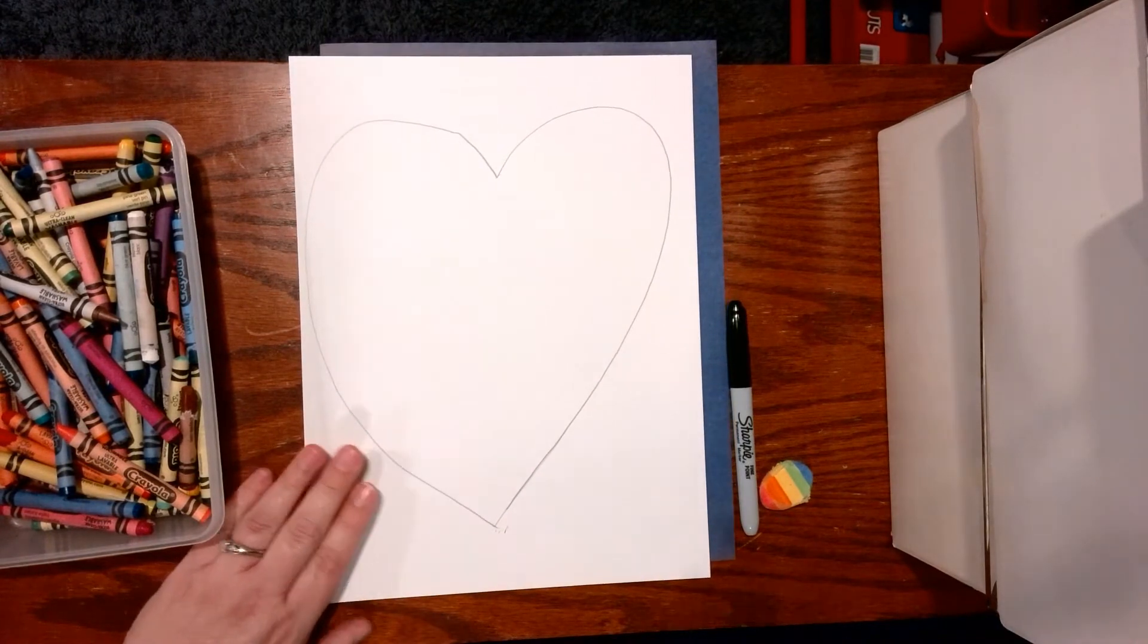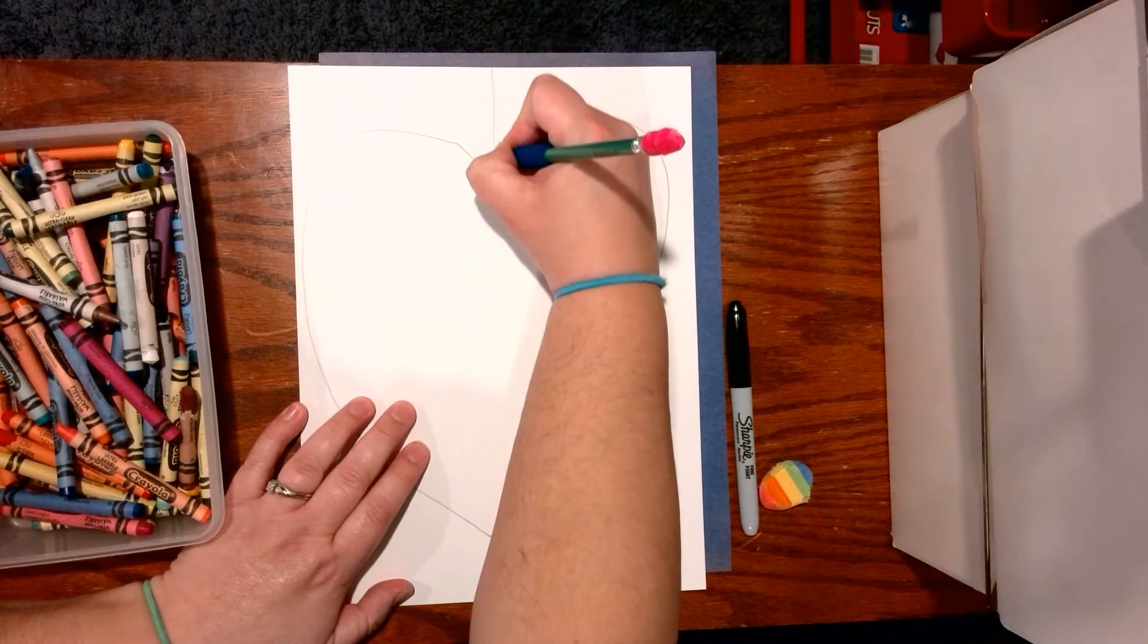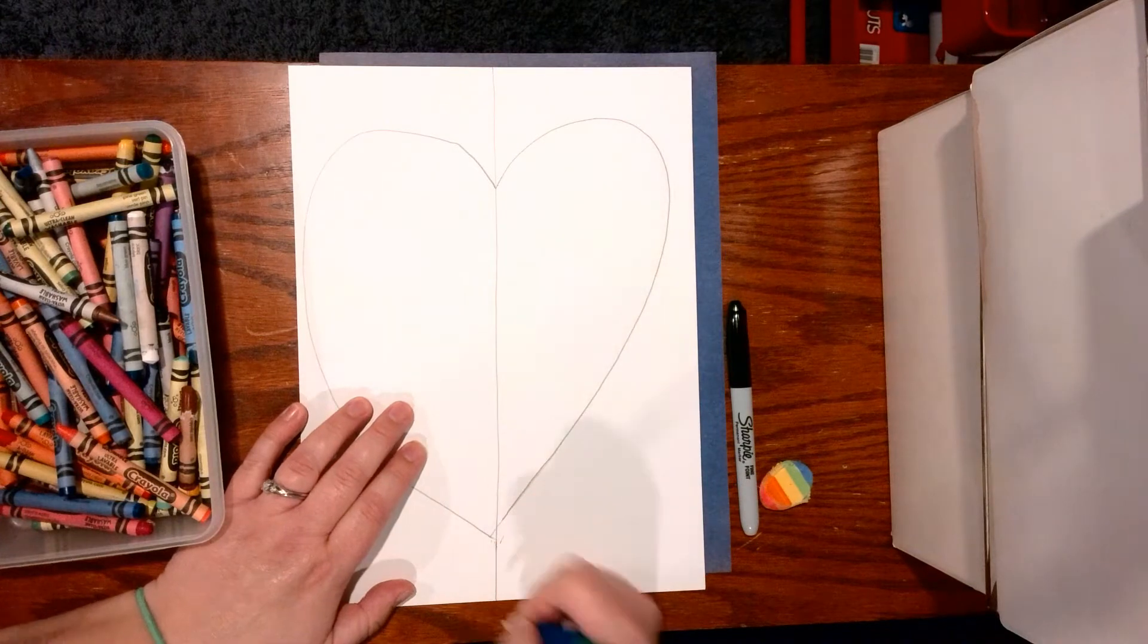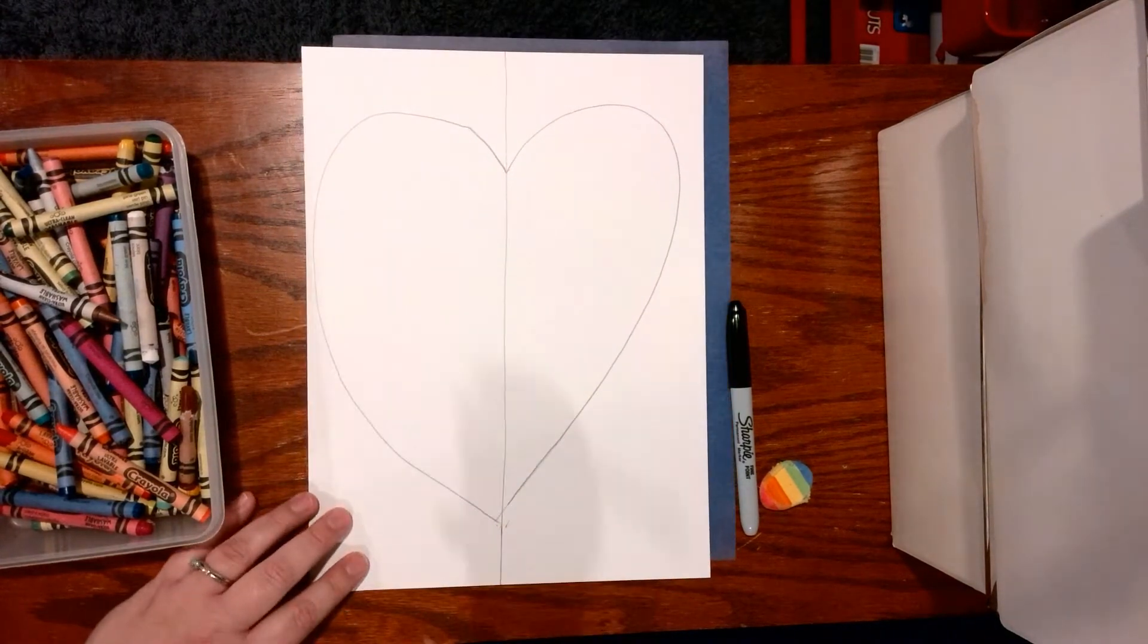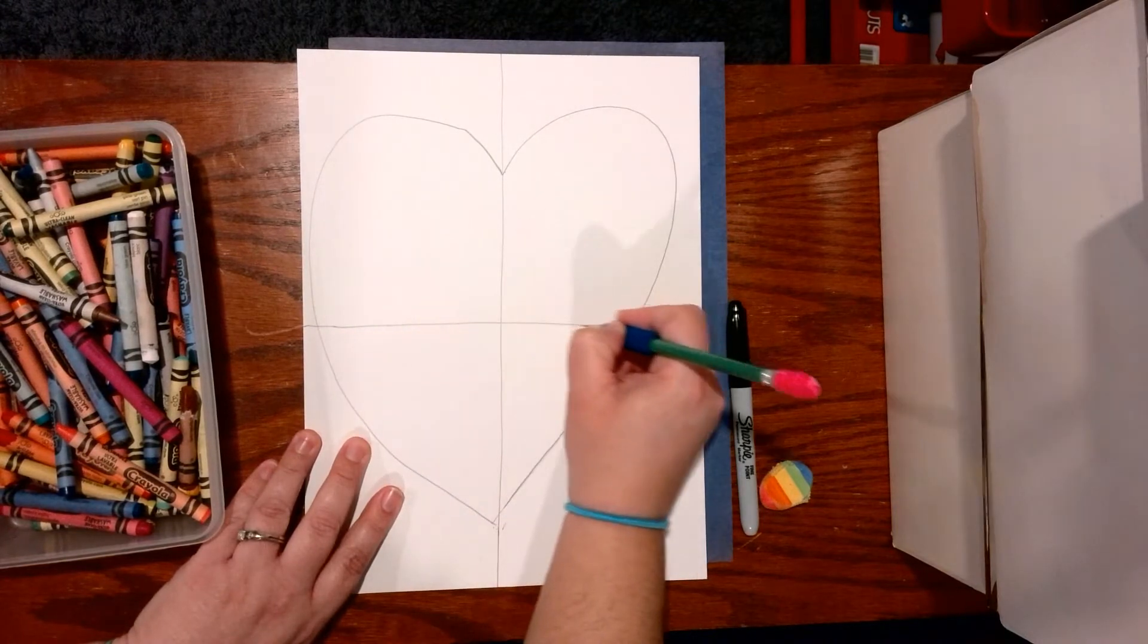My heart's not perfect, it doesn't have to be. Then I'm going to take and go right down the middle of my paper, make a line, and I'm going to go across the center of my paper with another line.